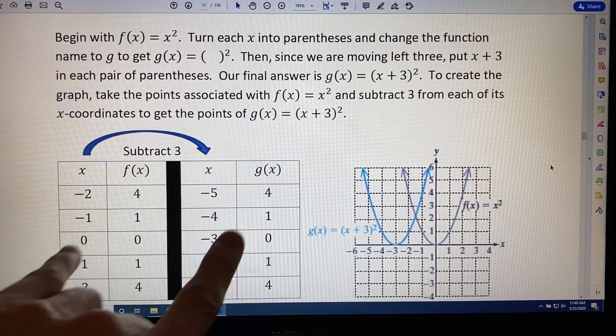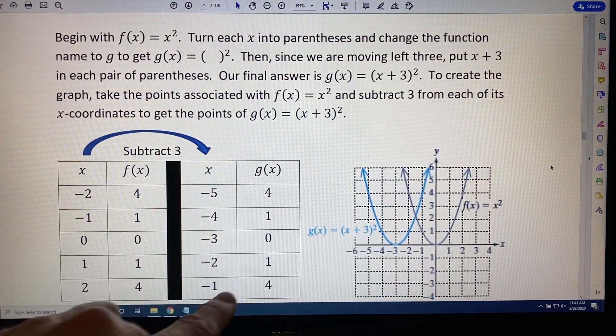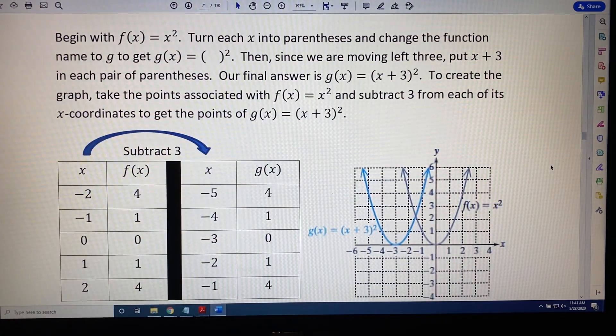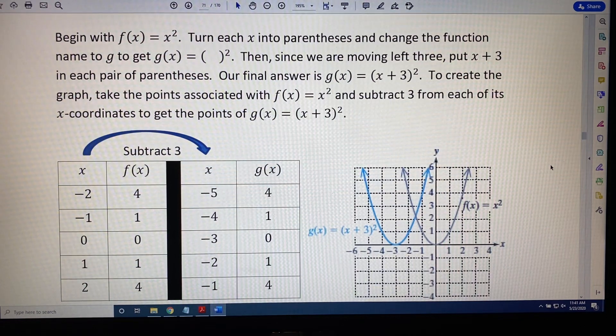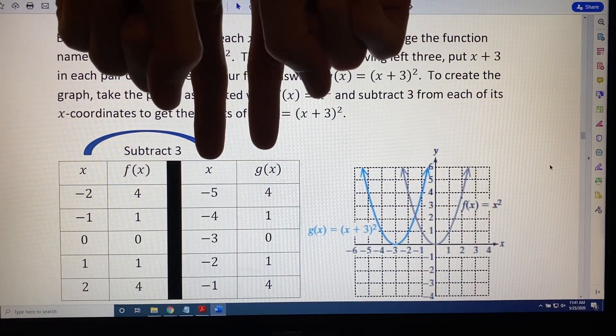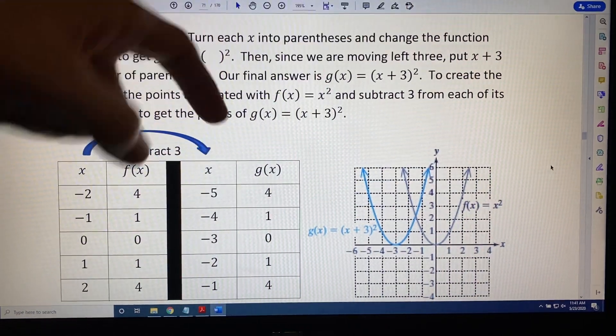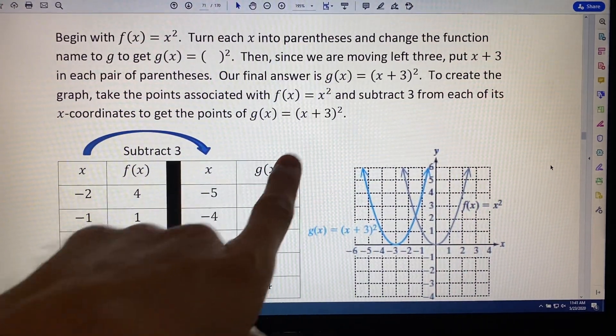Notice that the y values do not change here, only the x values, because we're moving to the left. So we now have a new set of ordered pairs, shown right here, x and g(x). These are the x's, and these are the y's associated with this equation.